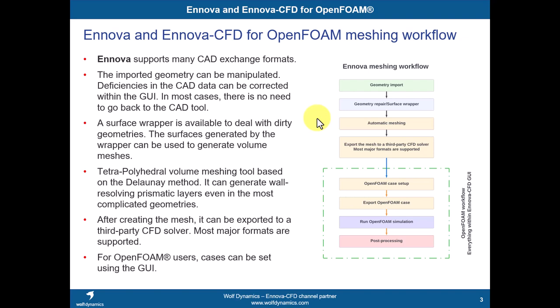After you repair or do your surface wrapper, you can do the automatic meshing. There are many methods implemented in Innova — we're going to go through those and play around with them. Just by setting a few options, you can get good quality meshes. After you have that, you can export your mesh to any of the CFD solvers. Innova supports most of the common CFD vendors — StarCCM+, Fluent, CFD++, generic formats like CGNS, and of course OpenFOAM format.